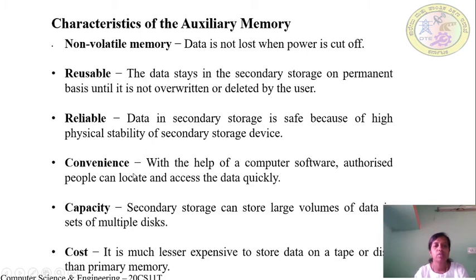Convenience: with the help of computer software, authorized people can locate and access data quickly. Capacity: secondary storage can store large volumes of data across multiple disks. Cost: it is much less expensive to store data on tape or disk than in primary memory.